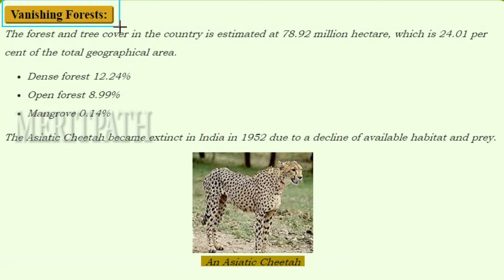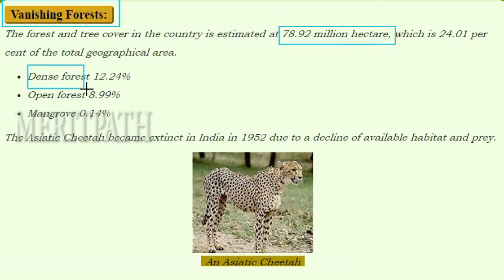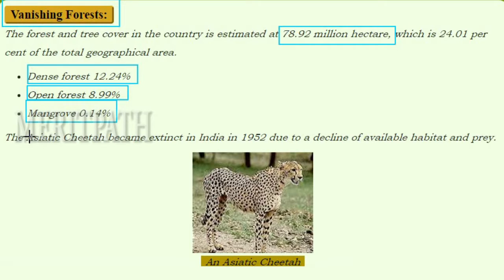The forest and tree cover in India is estimated at 78.92 million hectares, which is 24.01 percent of the total geographical area. Dense forest accounts for 12.24 percent, open forest 8.99 percent, and mangrove forest 0.14 percent — the least. The Asiatic cheetah became extinct in India in 1952 due to a decline in available habitat and prey.